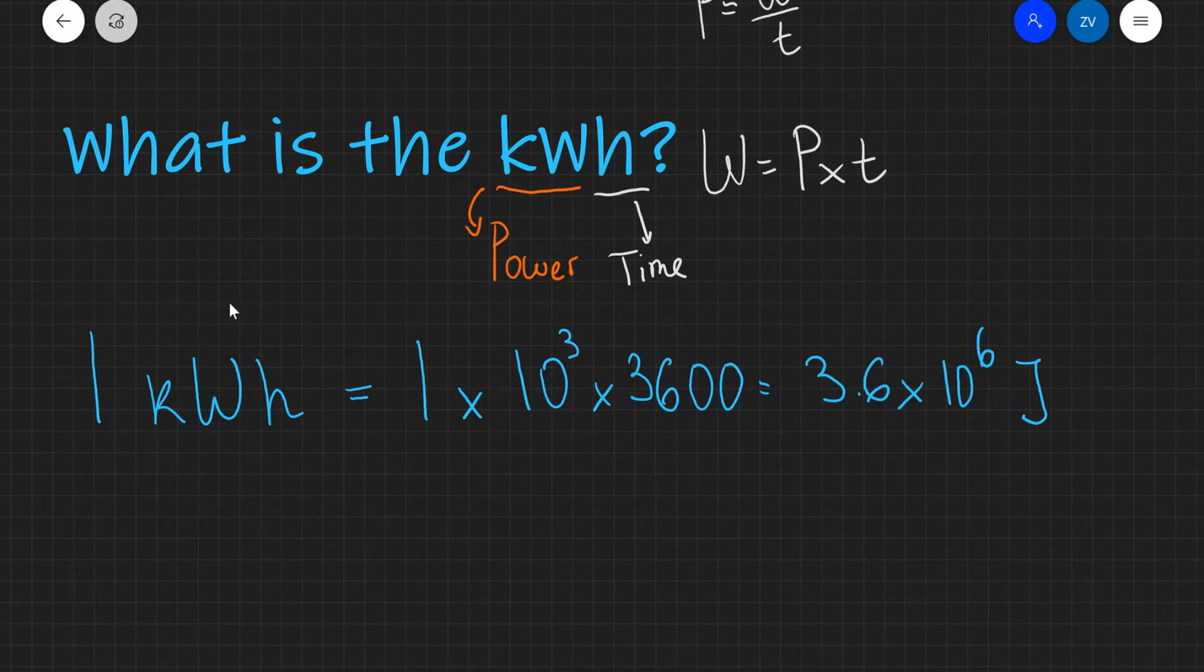Now we can see why we actually need the kilowatt hour. One joule is actually a tiny, tiny amount of energy. So if we get our electrical bill in, let's say, joules, we're going to be getting millions and millions of joules.